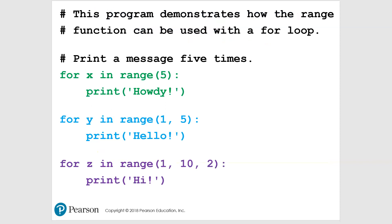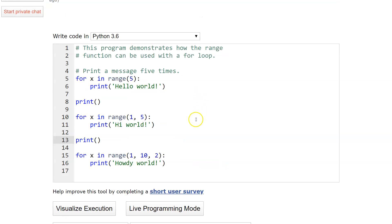Looking at this slide, we have three different range statements — X, Y, and Z — using the three different argument types. X uses one argument: range(5). Y uses two arguments. Z uses three arguments. Let's look at the code. Here we have for X in range — notice the format. For the first loop, we're printing 'hello world' five times. For Y, we print 'hi world' starting at value one up to five. For Z, we print 'howdy world' starting at one, going up to ten, by twos.